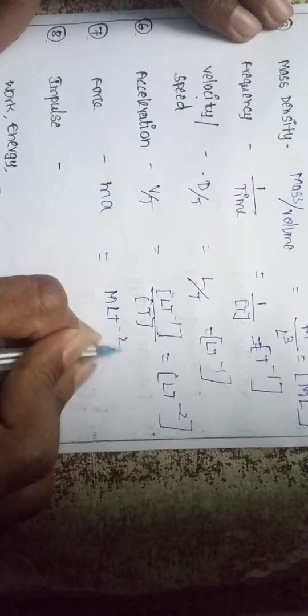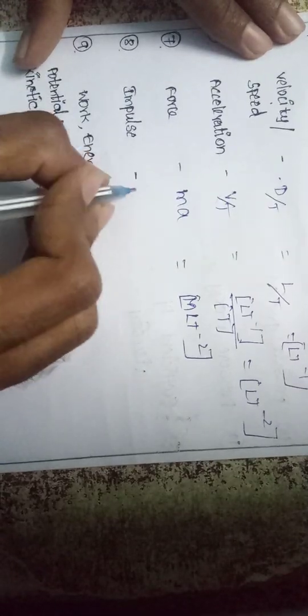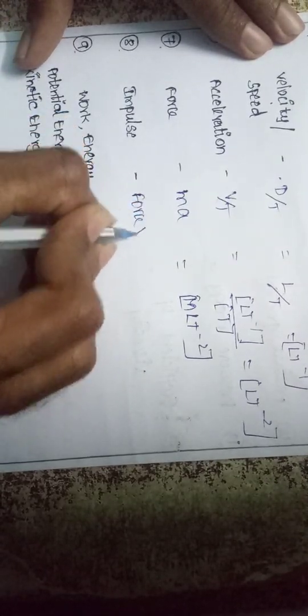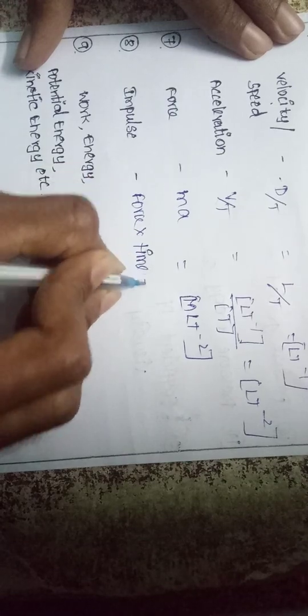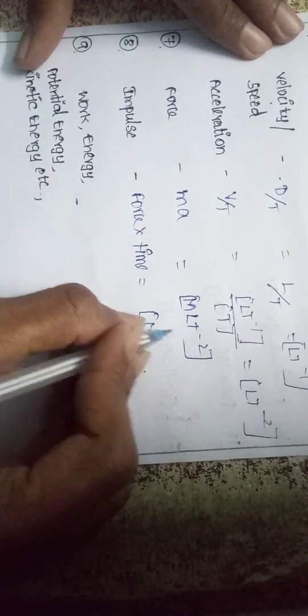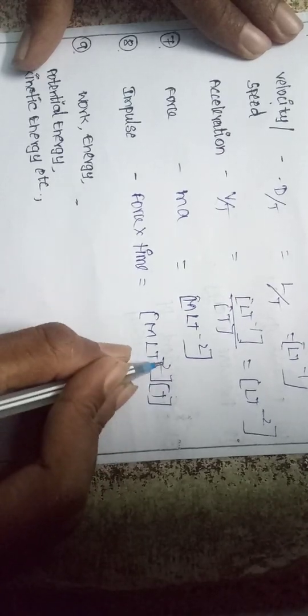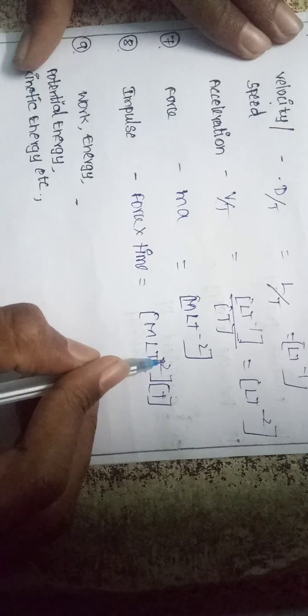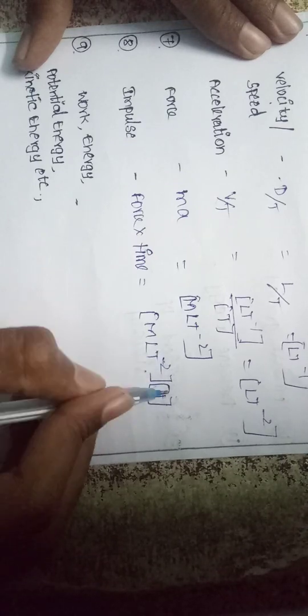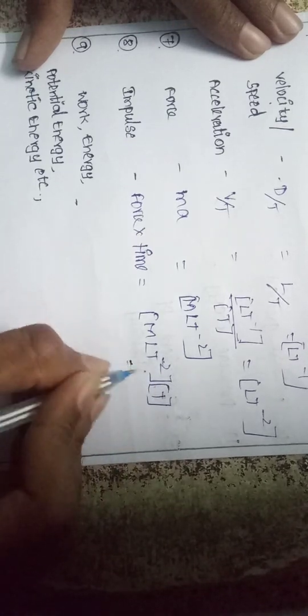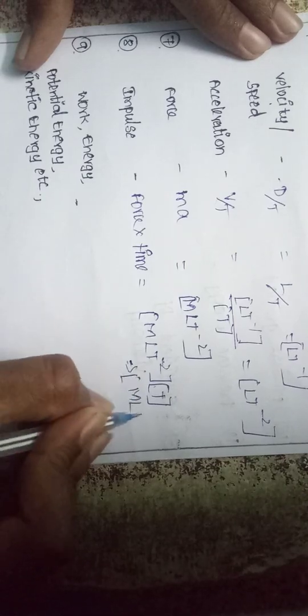Force is mass into acceleration. Mass is M, acceleration is L T⁻², so force is M L T⁻². For impulse, it is force into time — M L T⁻² multiplied by T — the powers add: minus 2 plus 1 gives M L T⁻¹.